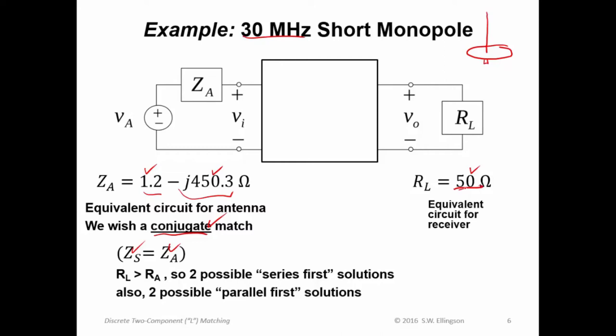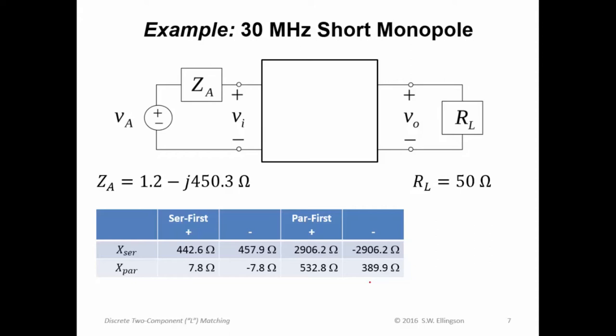We see R sub L is greater than R sub A, which is R sub S, so there will be two possible series first solutions. Also, there will be two possible parallel first solutions. So we see that there's four possible solutions to this: two series first, two parallel first. Here is X sub series, X sub par in each of those four possible solutions. The two series first solutions here, the two parallel first solutions here. For example, for the series first solution with the plus sign in front of the radical, we find that X sub series is 442.6 ohms, X sub par is 7.8 ohms, and so on. These can be either positive or negative. The positive values are going to turn out to be inductances. The negative values are going to turn out to be capacitances.